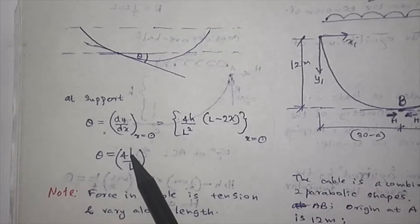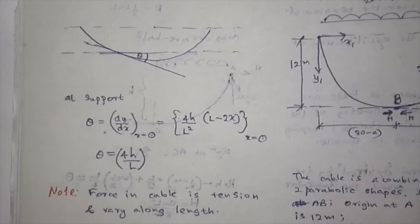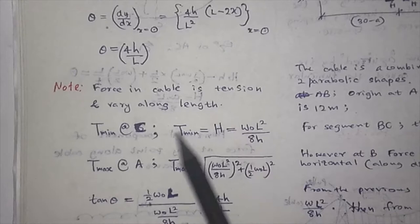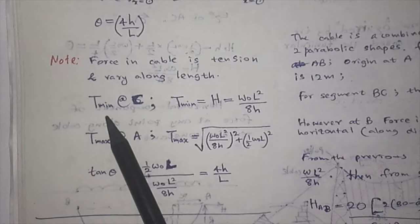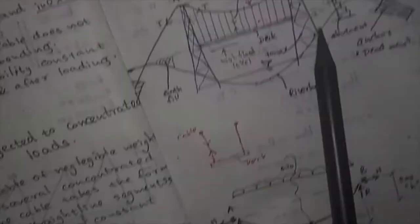Because force in cable is tension and varies along length, minimum tension is at C. It can be found as H equals W naught L squared over 8H.